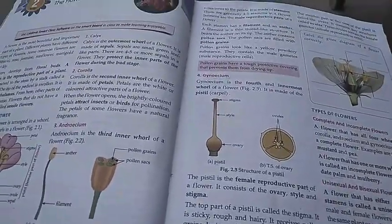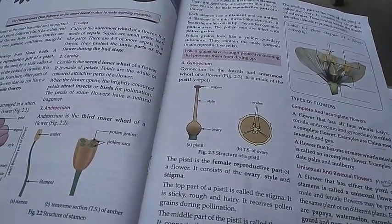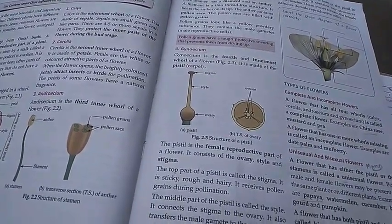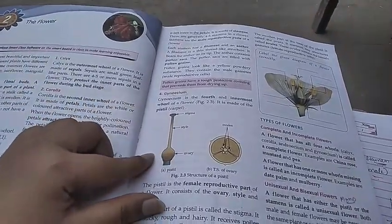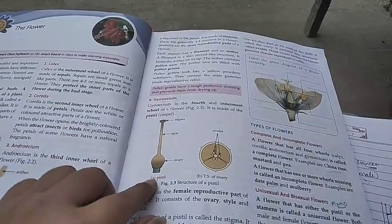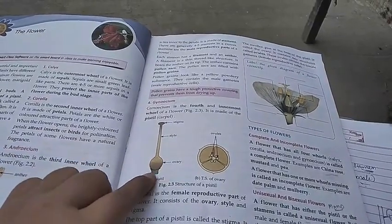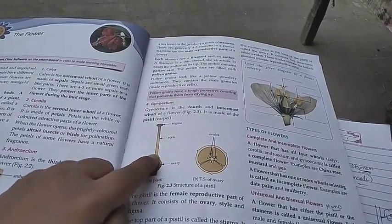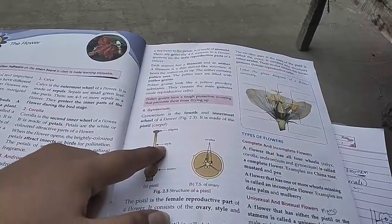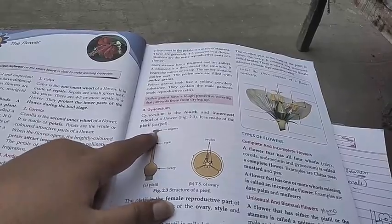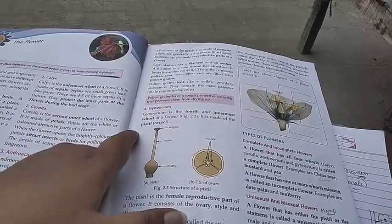Gynoecium. It is the fourth and innermost whorl of a flower. It is made up of the pistil, and this is the diagram of a pistil. At the bottom there is an ovary. Further up, it has a tube-like structure called the style, and at the top of the style there is the stigma.